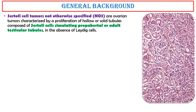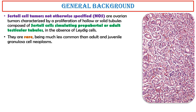General Background: Sertoli cell tumors not otherwise specified are ovarian tumors characterized by a proliferation of hollow or solid tubules composed of Sertoli cells simulating prepubertal or adult testicular tubules, in the absence of Leydig cells. They are rare, being much less common than adult and juvenile granulosa cell neoplasms.